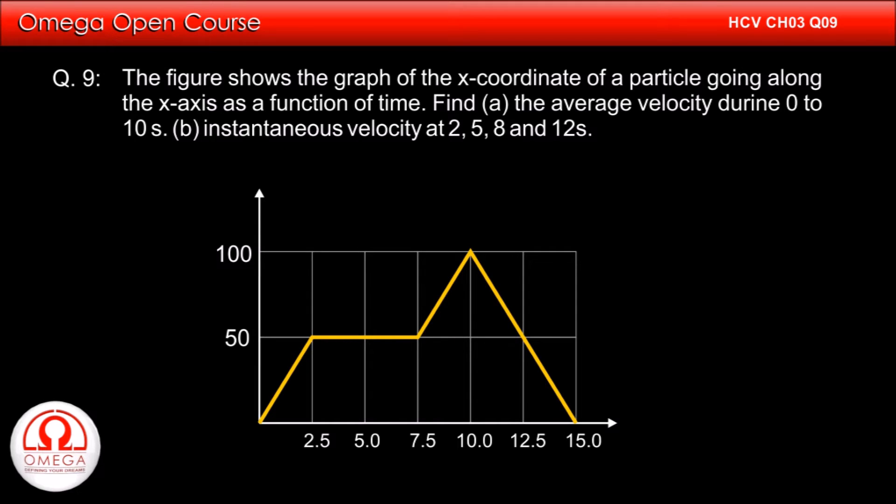The figure shows the graph of the x-coordinate of a particle going along the x-axis as a function of time. Find A, the average velocity during 0 to 10 seconds. B, instantaneous velocity at 2, 5, 8, and 12 seconds.